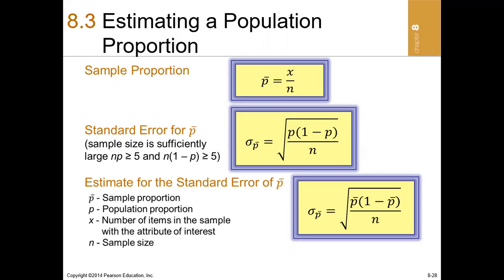Remember that a sample proportion is simply the attribute of interest divided by the total sample size. The standard deviation of a sample proportion — what we refer to as the standard error of a sample proportion — was covered in the sampling distributions series of videos.